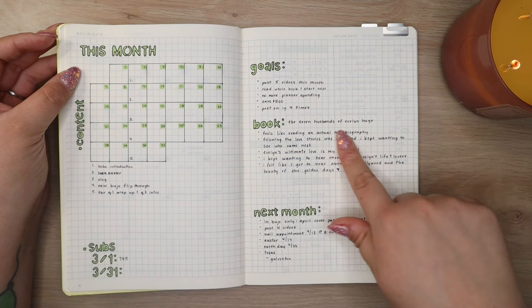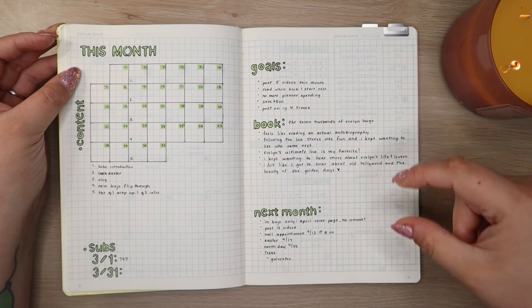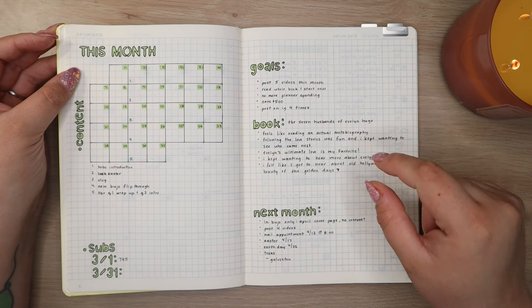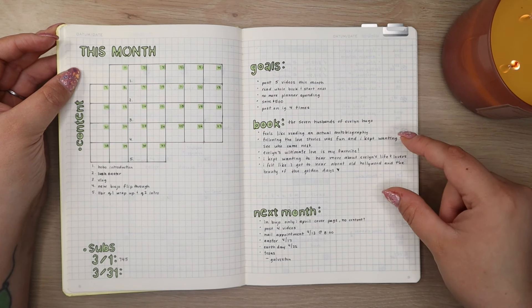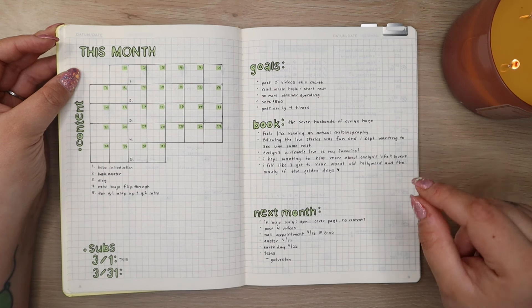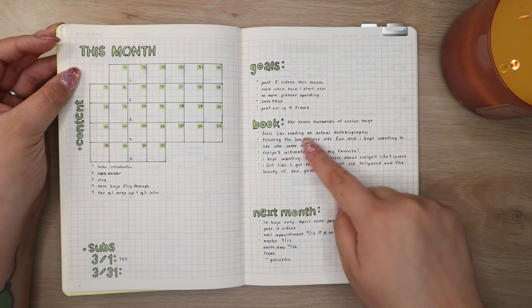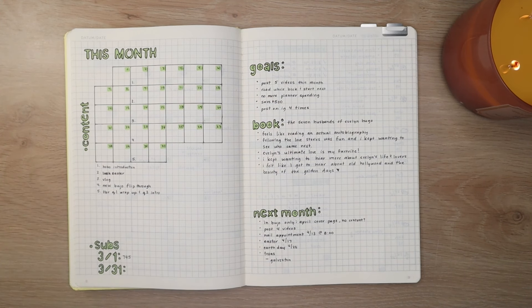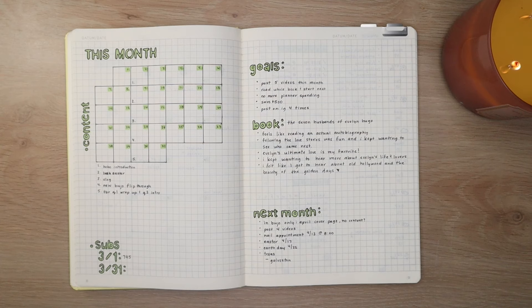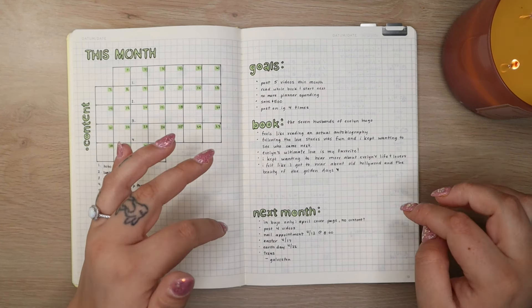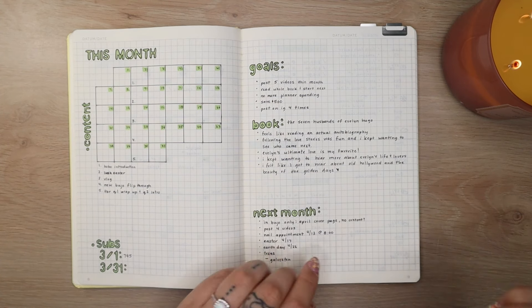And then I just have some space here to write down little blurbs about the book, especially so I can recall things or recall feelings about the book as I talk about it in my TBR videos that I post quarterly on my channel. So I have that. And then I also have a section for next month. So any holidays, birthdays, travel, appointments, anything like that that's coming up in the next month goes right here.